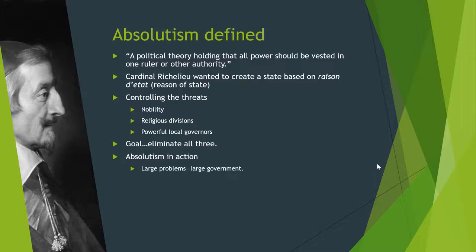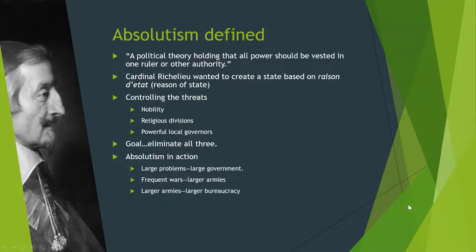What do you need for a large government? You need a large standing army. This helps with putting down frequent wars and enforces authority over large areas of the country. A large army leads to a larger bureaucracy — the government officials that exist under the absolute monarch who carry out the laws and orders. Power is going to be centered in these absolute rulers.